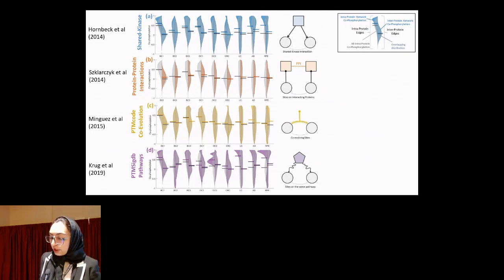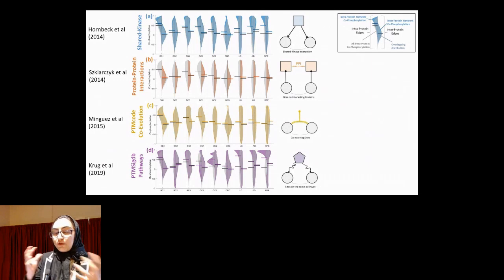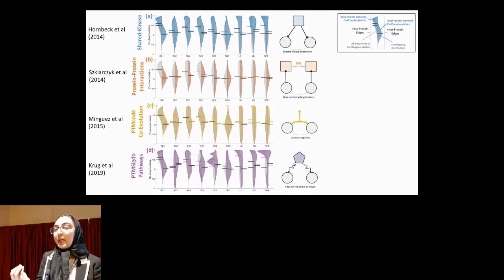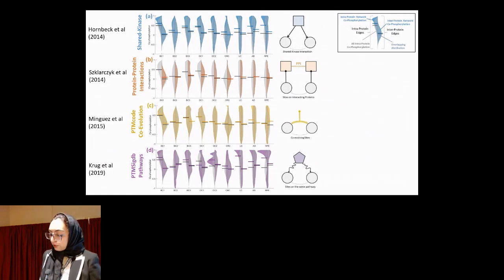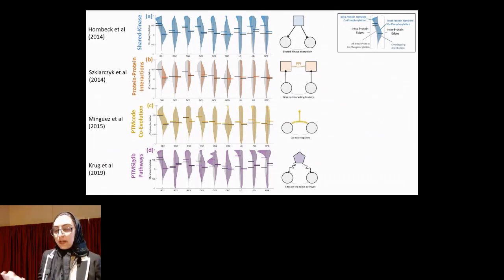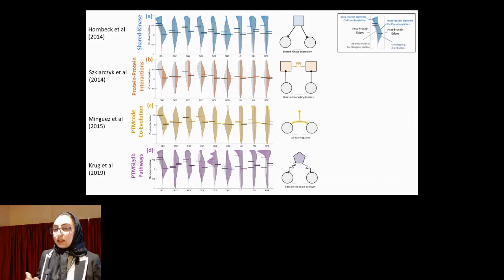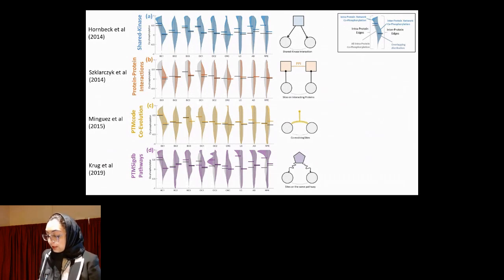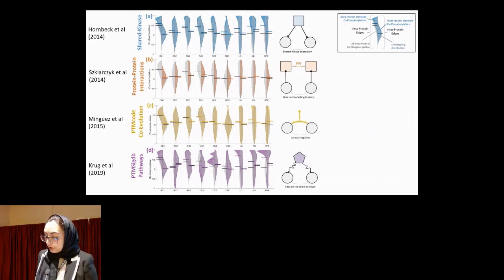Or if two sites reside on two proteins that are physically interacting, can we say those two sites are more likely to be co-phosphorylated? And if two sites are co-evolving based on the PTM code database, can we say they are co-phosphorylated? And if two sites are in the same pathway, what can we say about co-phosphorylation?